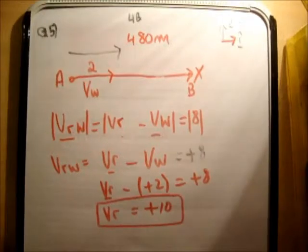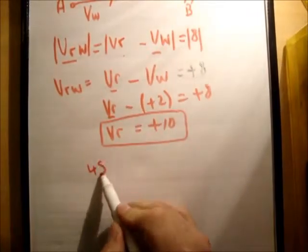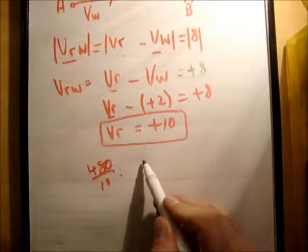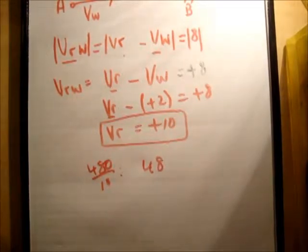Does that make sense? Yes, it does. And the reason is because if you're moving with this moving current, well then of course the current is going to speed you up. So we have 480 meters to do in 10 seconds, so it takes 48 seconds for the motion. So it takes 48 seconds to go from A to B with the current.